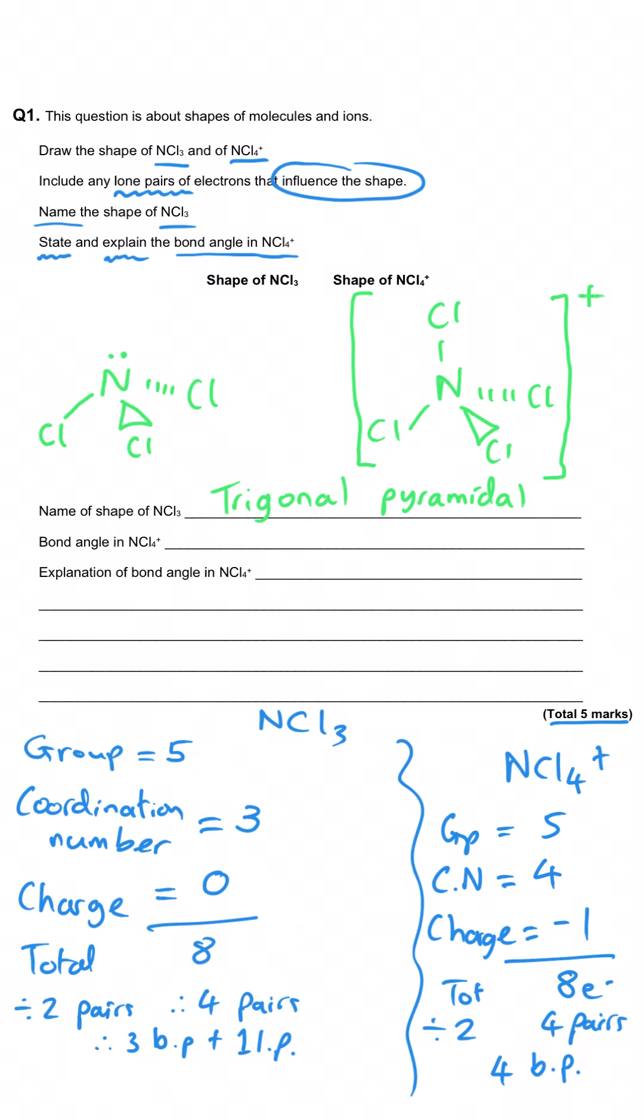You need to memorise quite a few different bond angles but the tetrahedral bond angle is the one that is most commonly asked for and that is 109.5 degrees. Don't forget to put the degree symbol in there so you're demonstrating that you know that it is an angle. As an aside the trigonal pyramidal bond angle is 107 degrees.